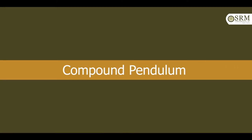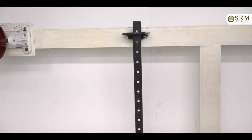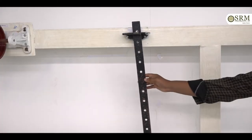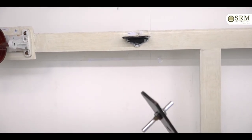Hi everyone, today we are discussing about compound pendulum. In this experiment, we have two aims. Aim number one: to determine the acceleration due to gravity by means of a compound pendulum. Aim number two: to determine the radius of gyration about an axis through the center of gravity for the compound pendulum. So, with the help of this compound pendulum, we need to find out acceleration due to gravity and radius of gyration.